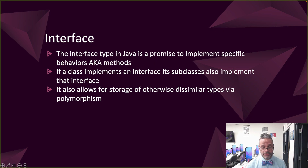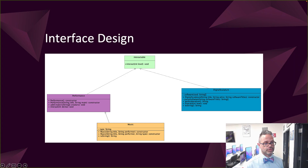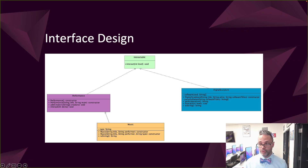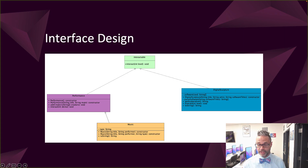Interfaces are another important concept in Java. An interface is a type that promises to implement specific behaviors — methods. If a class implements an interface, its subclasses also automatically implement that interface, allowing for polymorphic storage of otherwise dissimilar types. In this project, the Interactable interface has a single method interact(int level). It's implemented by Performance and by DigitalSculpture. Music does not need its own implementation since it inherits Performance's interact method directly, as interface methods must be public.